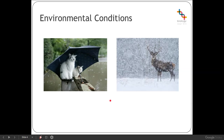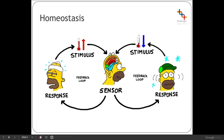Most organisms have evolved ways to adjust to those specific changes, whether they be immediate changes or long-term more seasonal changes. However, these changes can actually cause some physical stress to the organism, particularly where the condition is outside of what we would consider their normal physiological range. What organisms do during these periods of change is a process referred to as homeostasis, which you have seen at National 5 before.